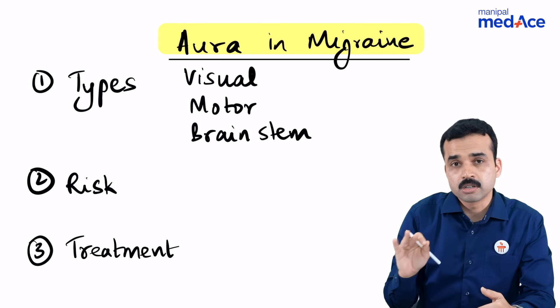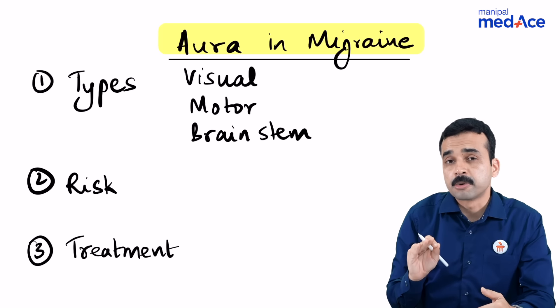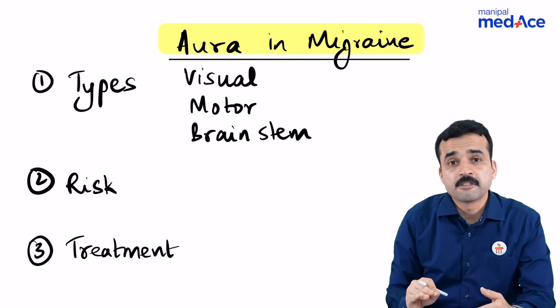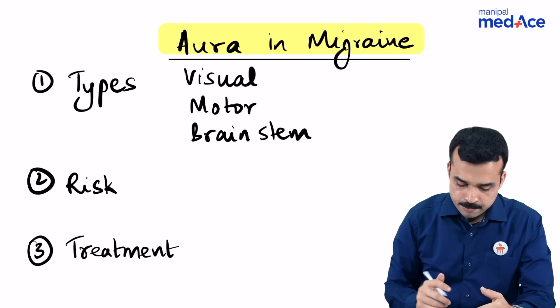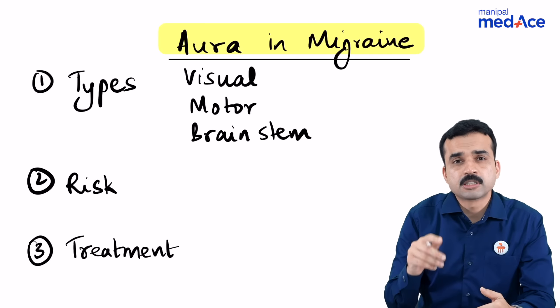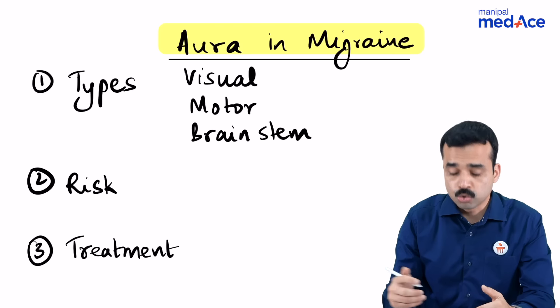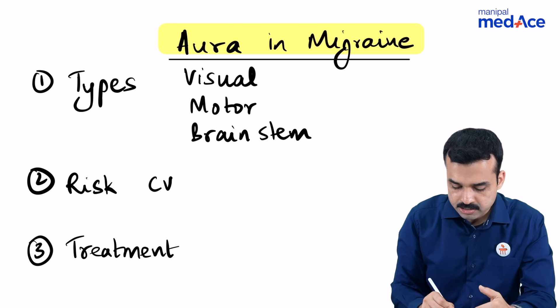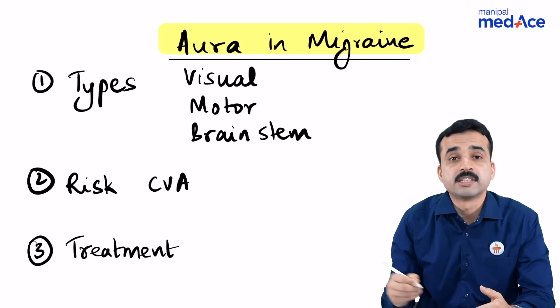The earlier terminologies — vertiginous migraine or basilar migraine — are no longer preferred. The current terminology is migraine with brainstem aura. What are the risks for those patients who have an aura compared to those who don't? There is almost a two times increased risk for developing a cerebrovascular accident.